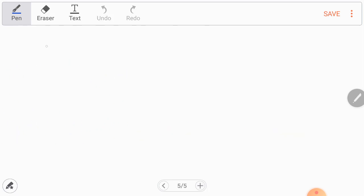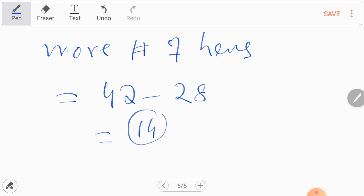Now, you have to give more number of hens. That is the requirement of the question. It will be 42 minus 28 equals 14. 14 are the more hens.